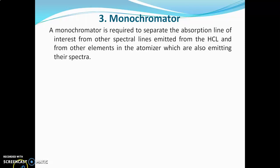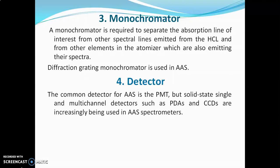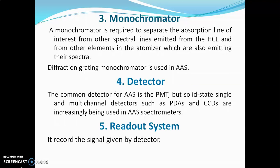A monochromator is required to separate the absorption line of interest from other spectral lines emitted from the hollow cathode lamp and from other elements in the atomizer which are also emitting spectra. Generally, a diffraction grating monochromator is used in AAS. The common detector for AAS is a photomultiplier tube, but solid-state single and multi-channel detectors such as PDAs and CCDs are also increasingly being used. Finally, the readout system records the signal given by the detector.